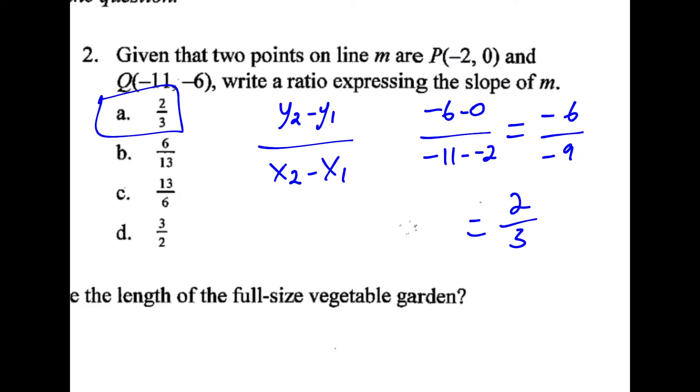The second one, we're finding the slope. So we take the slope formula, y2 minus y1 over x2 minus x1. On the bottom, since we're subtracting a negative, it's really like adding. And since we're adding to a negative number, that gets closer to 0, which is kind of tricky. The negatives cancel out, and this simplifies to 2 thirds.